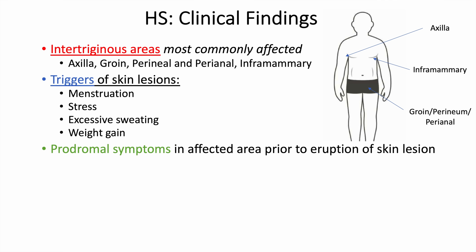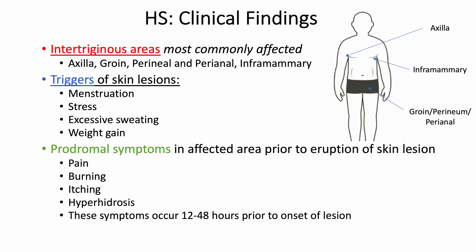There are specific prodromal symptoms in affected areas that occur before the eruption of skin lesions. An individual can start to have pain, burning, itching, and hyperhidrosis or excessive sweating in those areas before the lesion develops. These prodromal symptoms — pain, burning, itching, and excessive sweating — occur 12 to 48 hours prior to onset of the skin lesion.